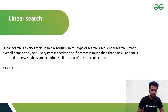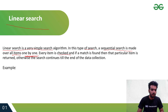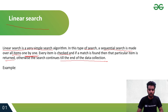In this lecture, we will study about linear search. So what is linear search? Linear search is a very simple search algorithm. In this type of search, a sequential search is made over all items one by one. Every item is checked and if a match is found, then that particular item is returned. Otherwise, the search continues till the end of the data collection.